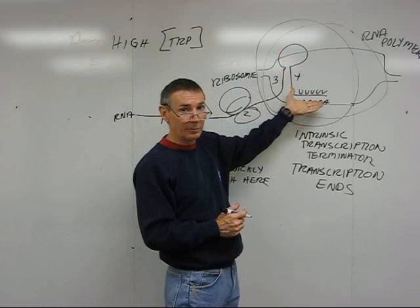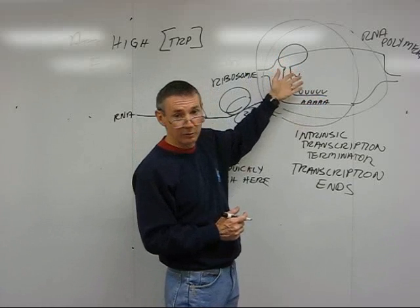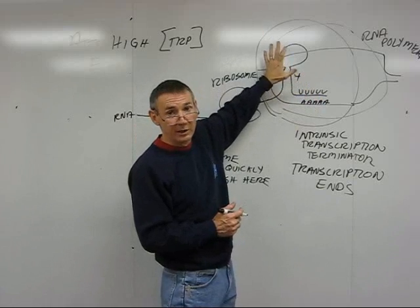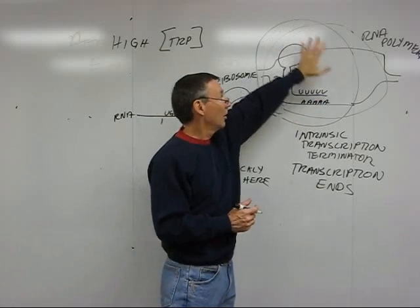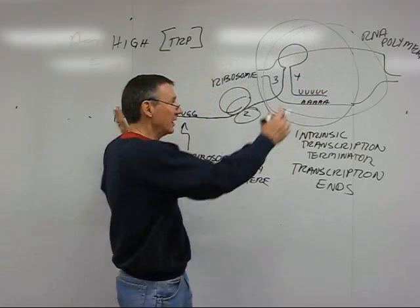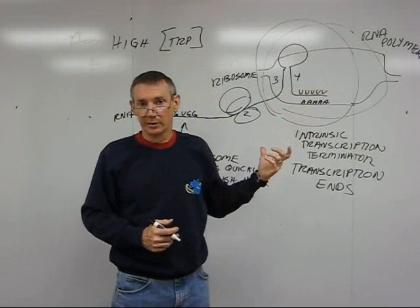3 and 4, because they're followed by a series of U's and other characteristics of 3 and 4, form an intrinsic terminator of transcription. RNA polymerase stops. And all you get transcribed is just a little leader region.